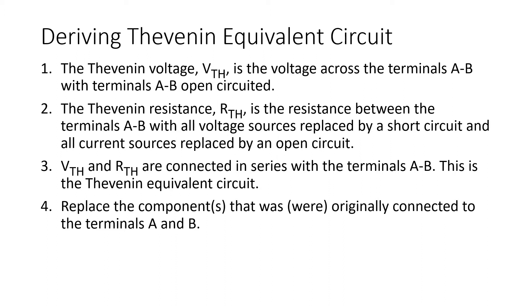Step 3, we connect the Thevenin voltage and the Thevenin resistance in series with the terminals A and B. This is the Thevenin equivalent circuit, as we saw in figure 1. Then we replace the component or components that were originally connected to the terminals A and B. In this video, we'll look at a couple of examples where we only have a single resistance connected across terminals A and B.